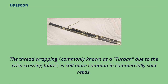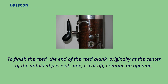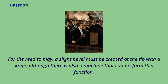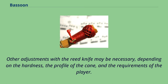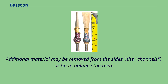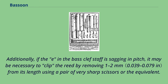To finish the reed, the end of the reed blank — originally at the center of the unfolded piece of cane — is cut off, creating an opening. The blades above the first wire are now roughly 27–30 mm long. For the reed to play, a slight bevel must be created at the tip with a knife, although there is also a machine that can perform this function. Other adjustments with the reed knife may be necessary depending on the hardness, the profile of the cane, and the requirements of the player. The reed opening may also need to be adjusted by squeezing the first or second wire with pliers. Additional material may be removed from the sides or tip to balance the reed. Additionally, if the E in the bass clef staff is sagging in pitch, it may be necessary to clip the reed by removing one to two millimeters from its length.